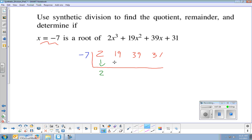Bring down the 2. Multiply it by the root to get negative 14. Combine to get 5. Multiply it by negative 7 to get negative 35. Combine it to get 4. Multiply it by negative 7 to get negative 28. Combine it to get 3.